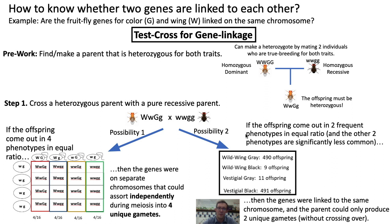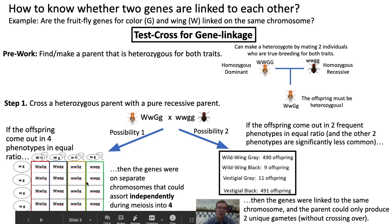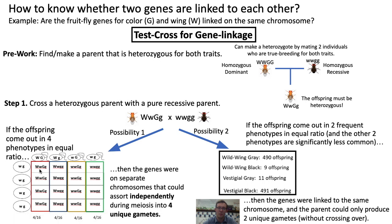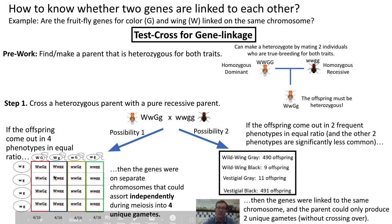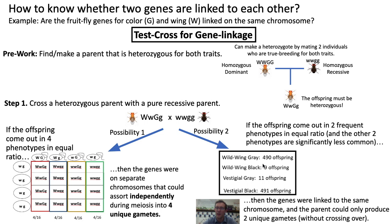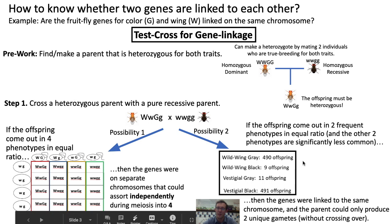So, in summary: if you want to figure out whether two genes are linked onto the same chromosomes, get a parent that is heterozygous for both traits and do a test cross with a recessive parent. If their offspring come out in four phenotypes of equal proportions, then the genes must have been on separate, independent chromosomes. Whereas if the offspring come out mostly in one of two phenotypes, then the genes were probably linked and a little bit of crossing over occurred. And that's it — you guys have some practice problems. See you next class.